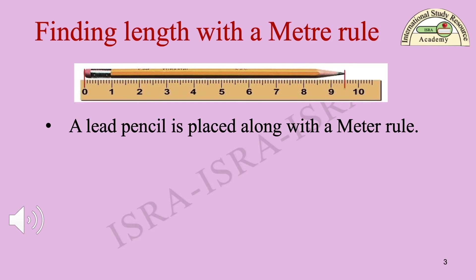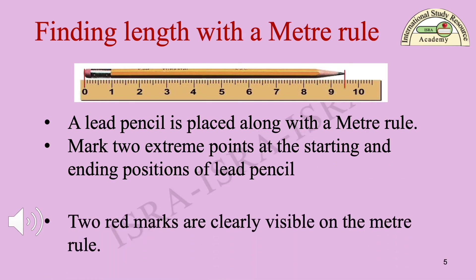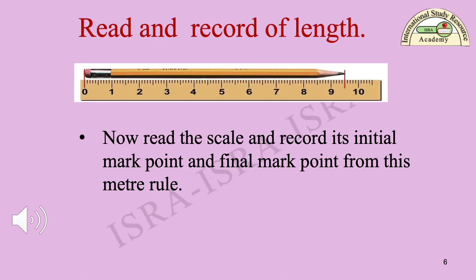A lead pencil is placed along a meter rule as shown in the diagram. Mark two extreme points at the starting and ending positions of the lead pencil on the meter rule. Two red marks are clearly visible on the meter rule. Now read and record the initial mark point and the final mark point from the meter rule.